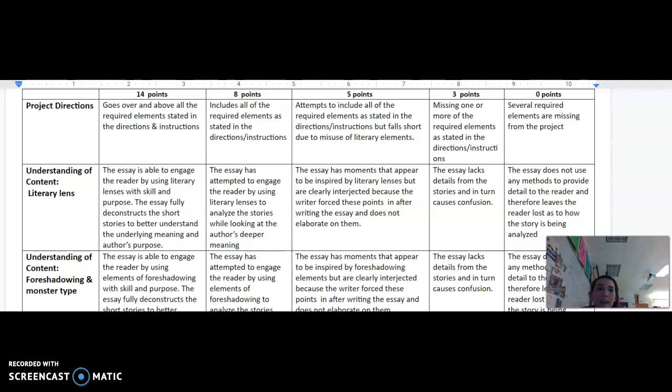Our next category is understanding of content, specifically literary lenses. This is also a 14 point category. 14 points for the highest being that the essay is able to engage the reader by using literary lenses with skill and purpose. The essay fully deconstructs the short stories to better understand the underlying meaning and author's purpose.